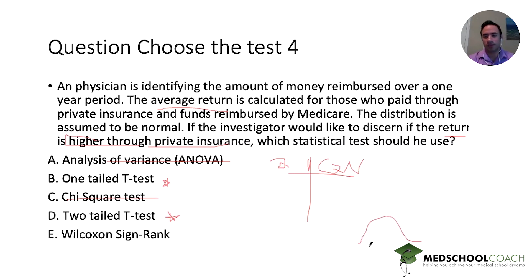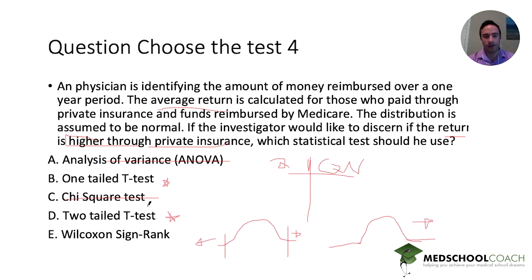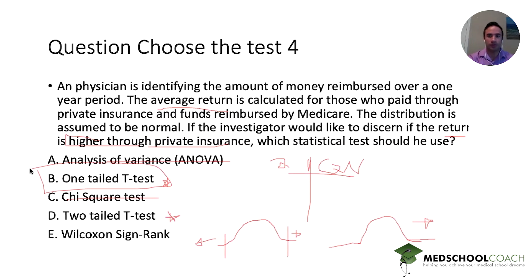A way to visualize this: with a two-tailed t-test, we're interested in whether the payment is higher or lower — both directions. With a one-tailed t-test, we only want to see if it's higher or lower in one specific direction. In this case, it's a one-tailed t-test. You can apply the same concept with ANOVA — a one-tailed ANOVA or two-tailed ANOVA.